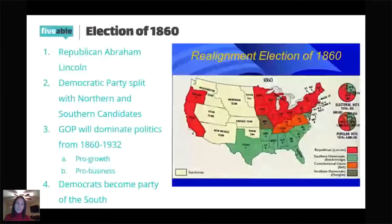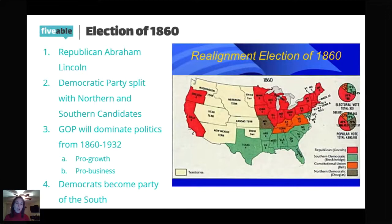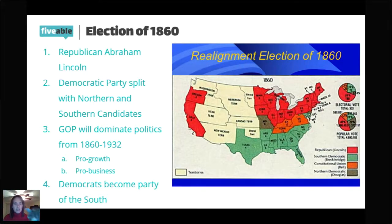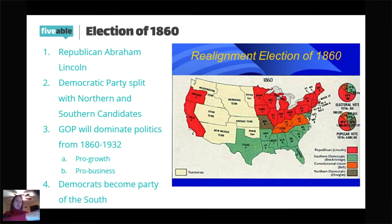When the 1860 election comes up, the Republican Party — our Republican Party today — ends up forming. They're sometimes referred to as the Grand Old Party or the GOP. This new Republican Party, when they first started, was technically a third party at the time, but they quickly began to dominate national politics. We see the Republicans win the 1860 election, and then basically from 1860 to 1932 the Republicans are going to be the ones in control of the presidency.